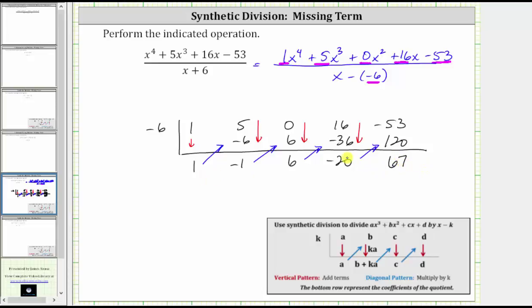This last row represents the quotient as well as the remainder. Whenever we divide a degree four polynomial by a degree one polynomial, the degree of the quotient is going to be four minus one, which is three, which means this one is the coefficient of the degree three term in the quotient. And therefore, this represents the quotient of one x cubed minus one x squared plus six x minus 20, and the 67 is the remainder.